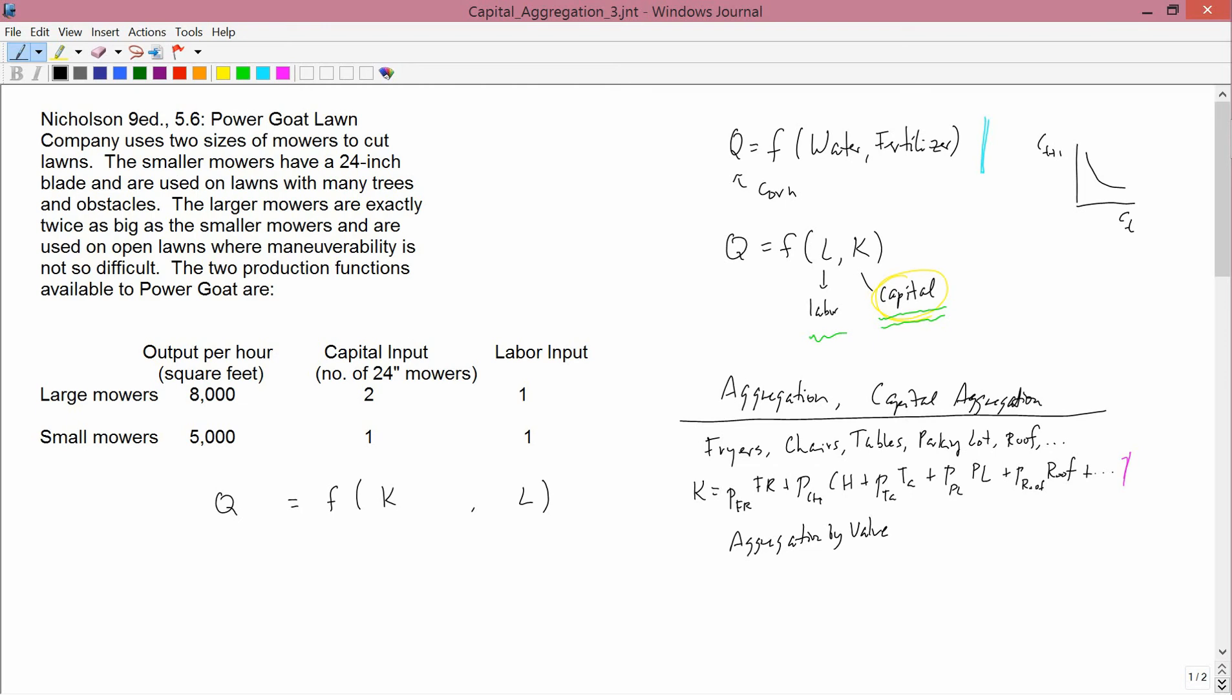This is adding up the dollars' worth of fryers, and the dollars' worth of chairs, and the dollars' worth of tables, and the dollars' worth of parking lot, and the dollars' worth of roof, and so forth. This aggregation by value, this is what we call Scheme 2 in the previous slide.